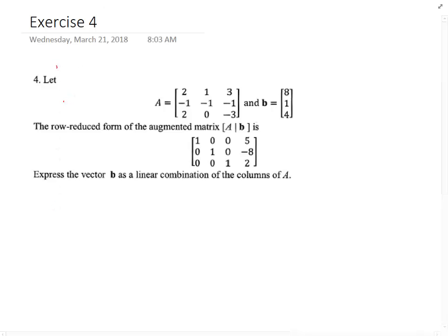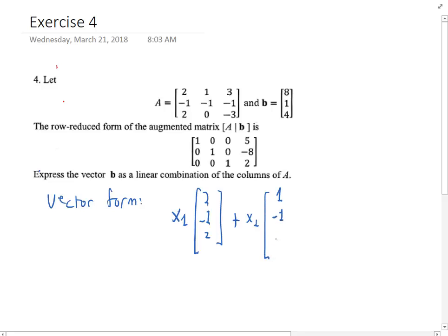Let's see, here we go. So the vector form of the system of equations is x1 times [2, -1, 2] plus x2 times [1, -1, 0] plus x3 times [3, -1, -3].